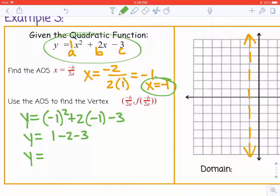So 1 - 2 is -1, minus 3 is -4. Our vertex is (-1, -4).